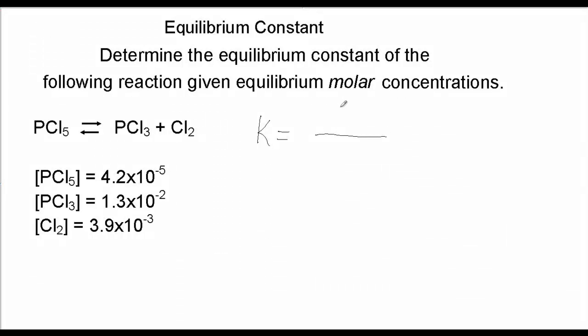Now we have the two products, and the products go in the numerator. One is PCl3, and that is raised to the first power because there's a coefficient of one. It's not written, but the implication is that the coefficient is one. It's not necessary to write one in this equilibrium expression, but I'm doing this for emphasis.